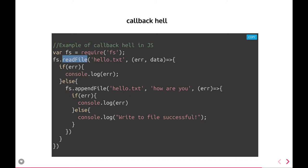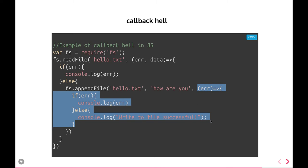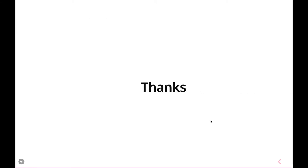Callback hell is when you write a callback inside another callback. For example, fs.readFile returns a callback; inside that, you check for an error, and if data is present you write more code — like appending a file — which again has a callback. That's a callback inside a callback. Two levels is fine, but as the nesting increases you should switch to promises.